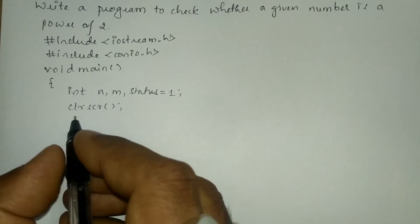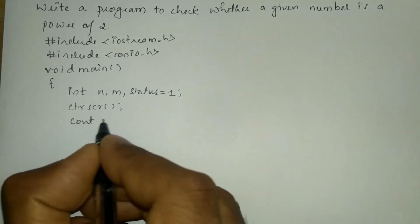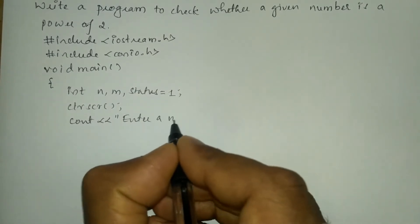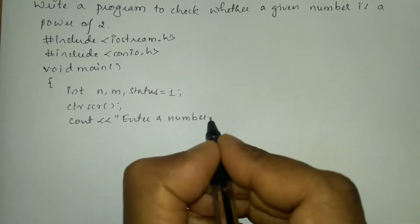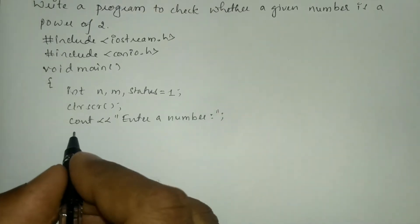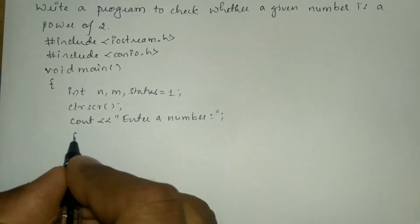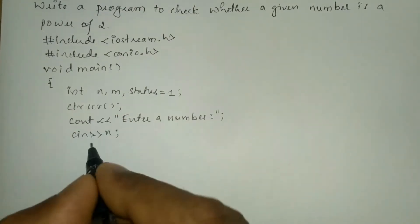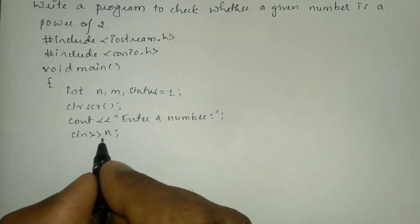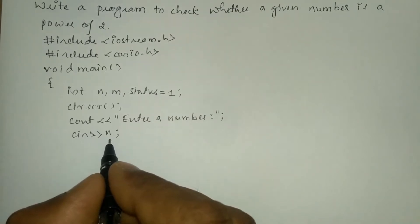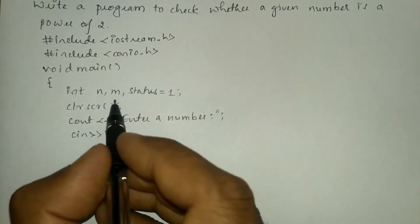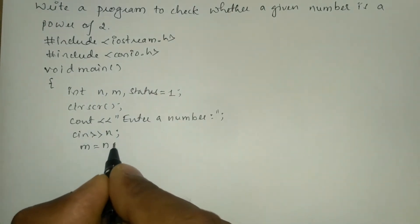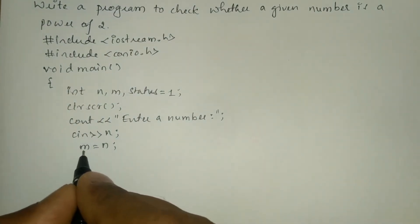Now we will ask the user to enter a number using cout with the stream insertion operator, writing "enter a number" in double quotation marks, and put a semicolon. We are going to receive the response from the user through the keyboard using cin and take the variable n. After receiving the value from the user, we are going to keep the original value intact in one more variable called m, so here I am going to assign value n to the variable m.